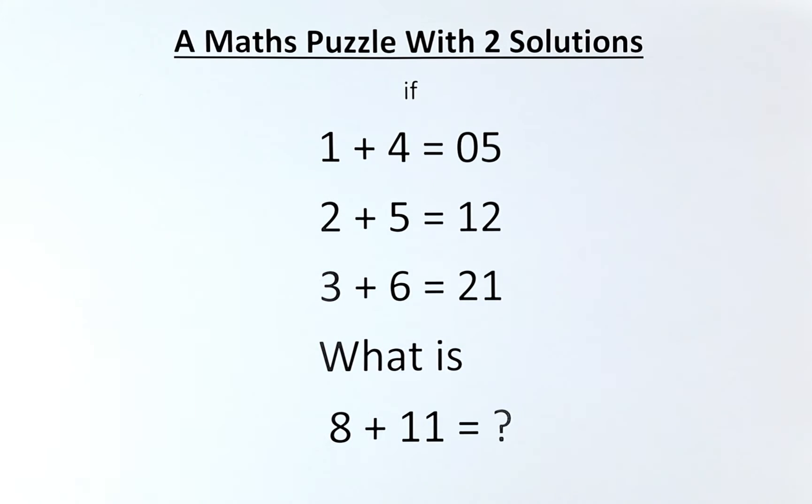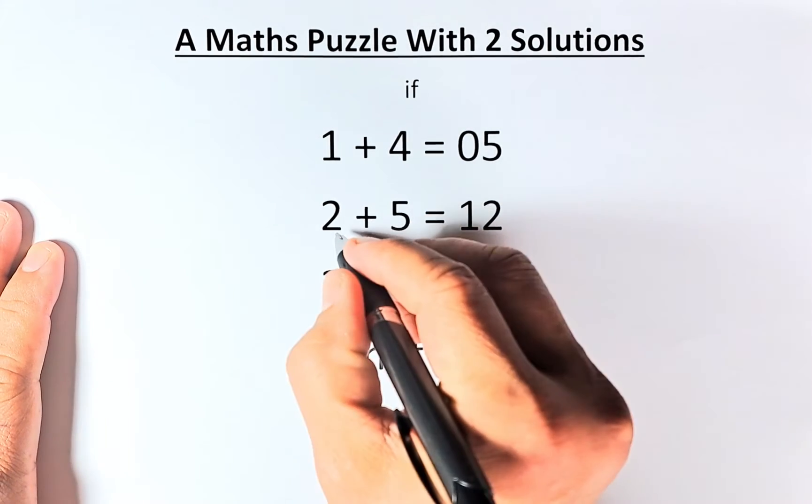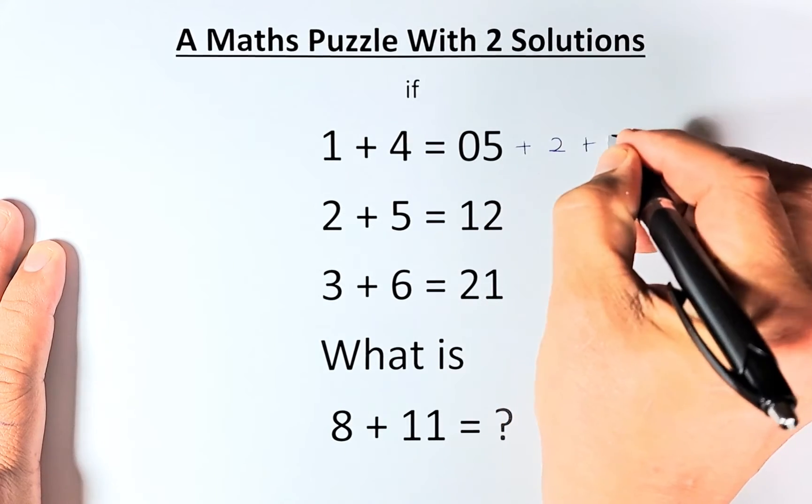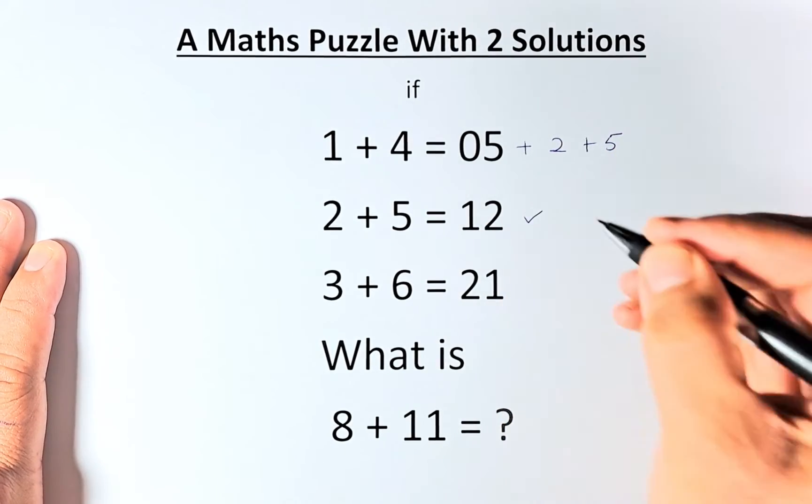So without further ado, let's try to solve this problem. 1 plus 4 equals 5, that's correct. And then to get 12, we're going to add the next two numbers. So 5 plus 2 plus 5, that will give us 12.